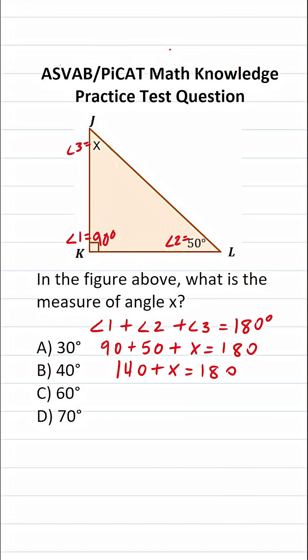And to get X by itself, that is the measure of angle 3, all we have to do is subtract 140 from both sides of this equation. This crosses out, leaving you with X over here. 180 minus 140 is going to be 40. So we know that X is 40 degrees. So the answer to this one is B.